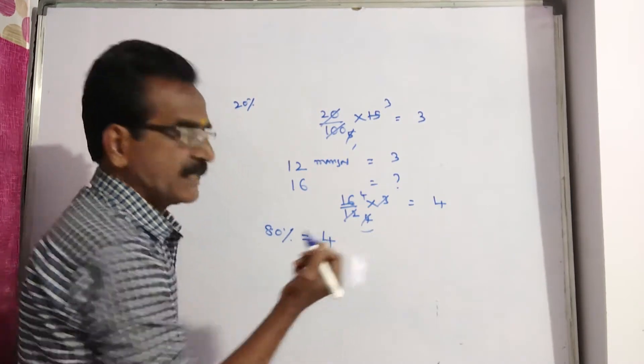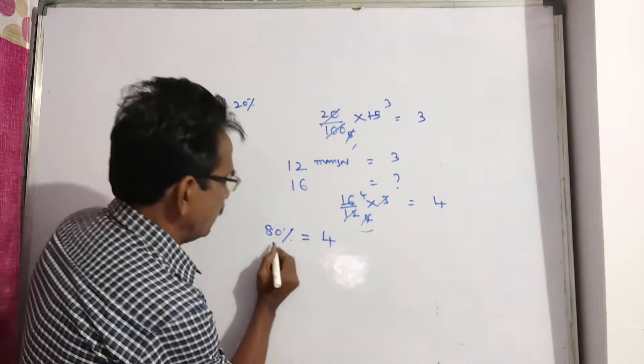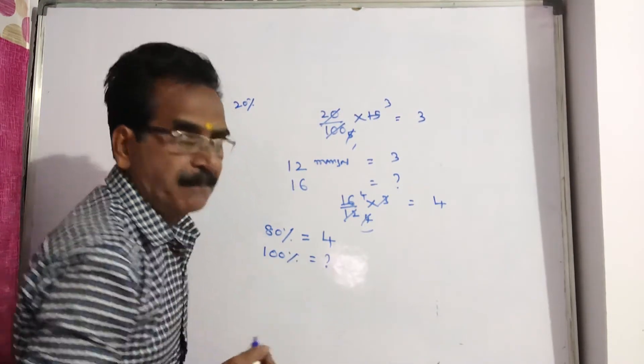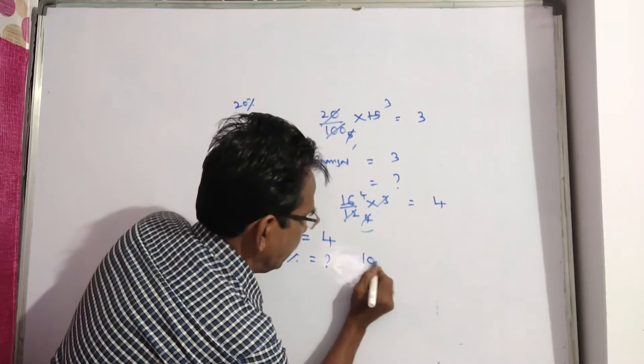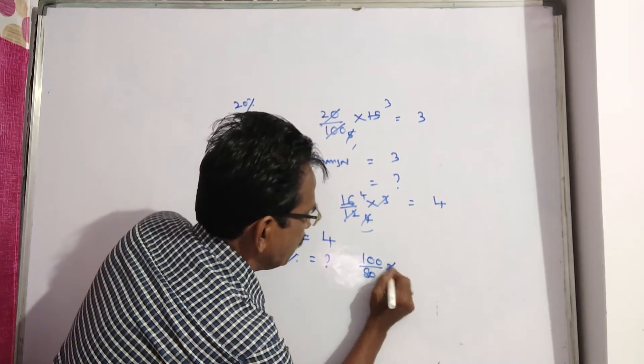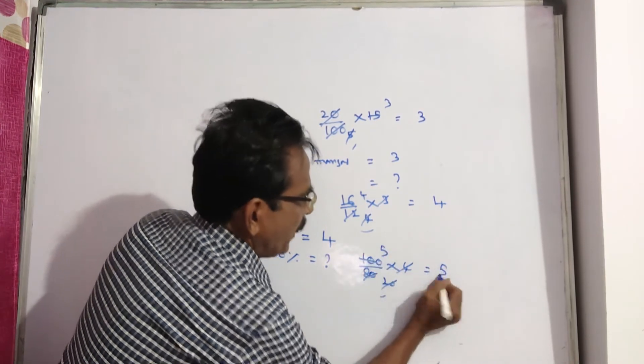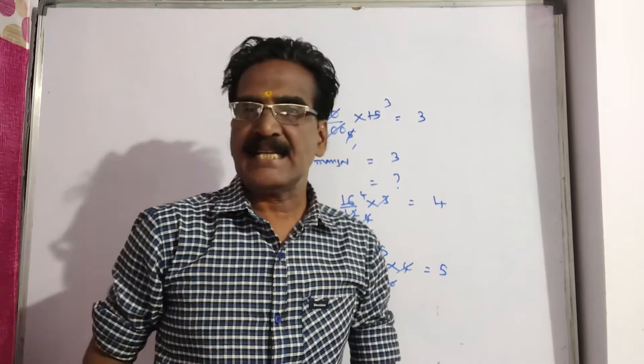80 percent equals 4 rupees. Then what is 100 percent? That gives us the price before reduction. 100 by 80 into 4, four twenties, 25. So 5 rupees is the price of 16 mangoes before reduction.